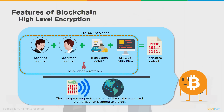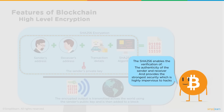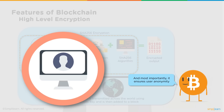How does encryption happen on a typical blockchain network? Whenever a sender initiates a transaction, he signs it using his private key, and all details — the receiver's address and other transaction details — are encapsulated and encrypted using the sender's private key. Bitcoin uses the SHA-256 encryption algorithm, which creates a highly secure encrypted output. The encrypted output is transmitted across the world, and after verification by miners it is added to a block. SHA-256 enables verification of the authenticity of the sender and receiver, provides the strongest security highly impervious to hacks, and ensures the anonymity of both initiating and receiving users.